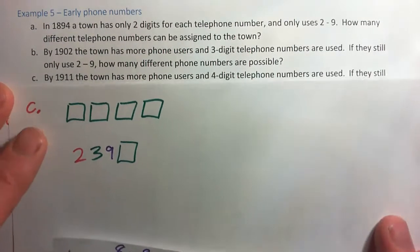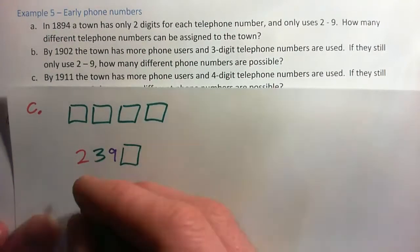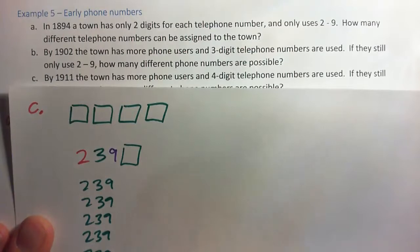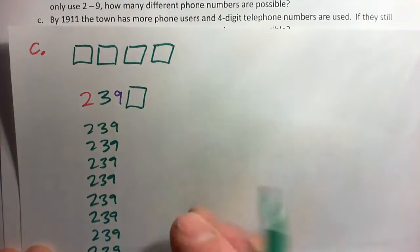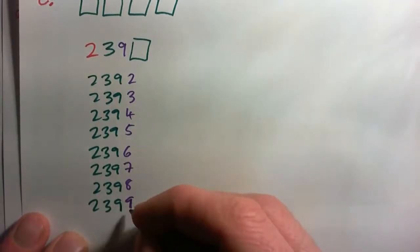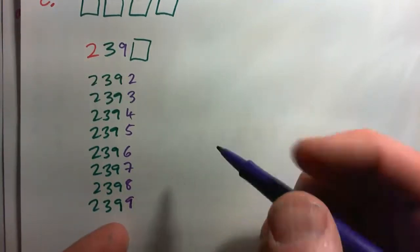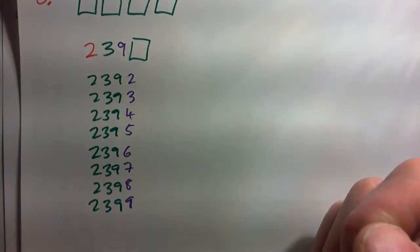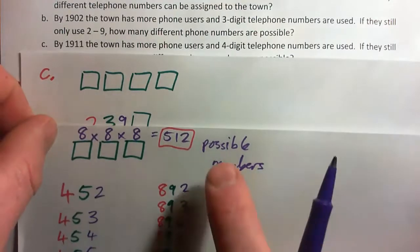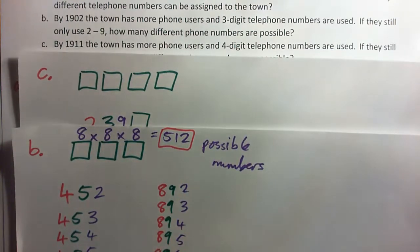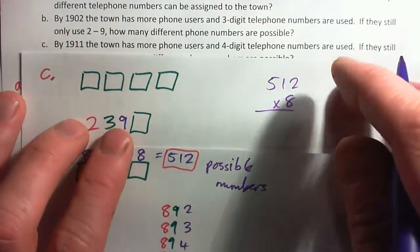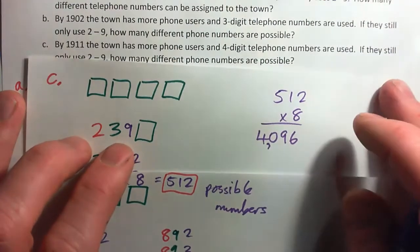For example, from 2-3-9 you can create 2-3-9-2, 2-3-9-3, 2-3-9-4, 2-3-9-5, 2-3-9-6, 2-3-9-7, 2-3-9-8, 2-3-9-9 — that's 8 new numbers for any 3-digit phone number. There were 512 three-digit numbers, and for every one of those we can add on another digit to get 8 new 4-digit numbers. So 512 times 8 equals 4,096 possible 4-digit phone numbers.